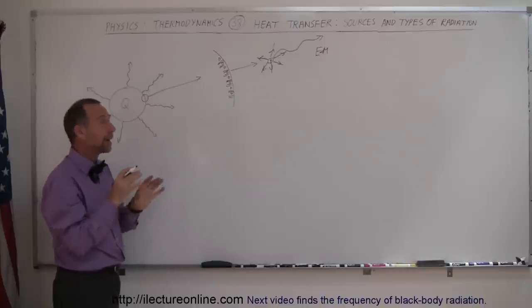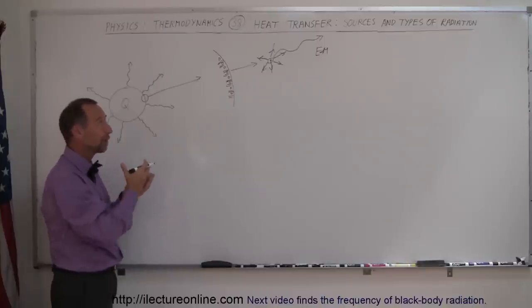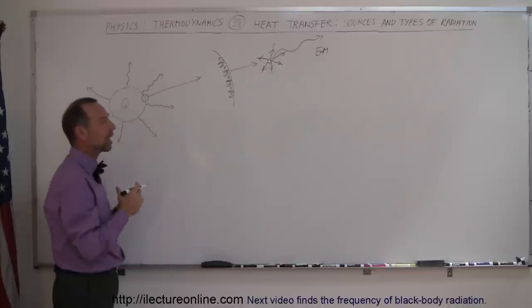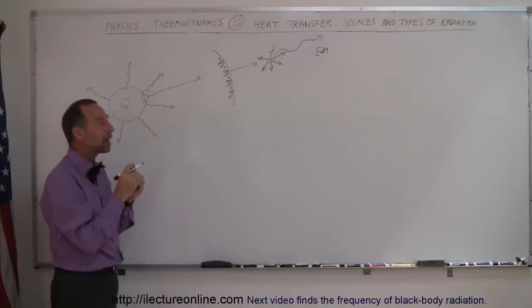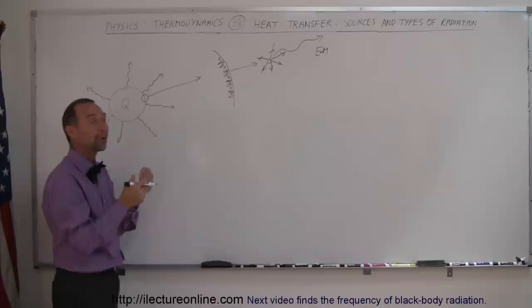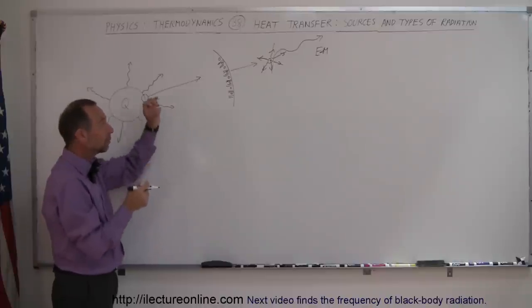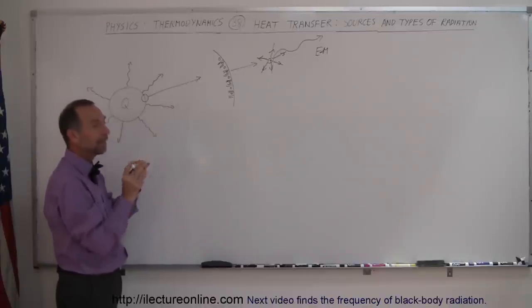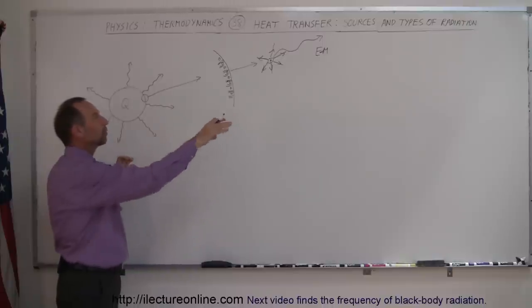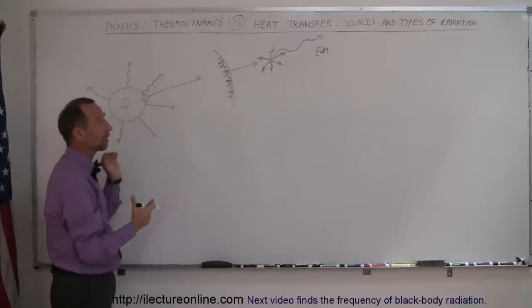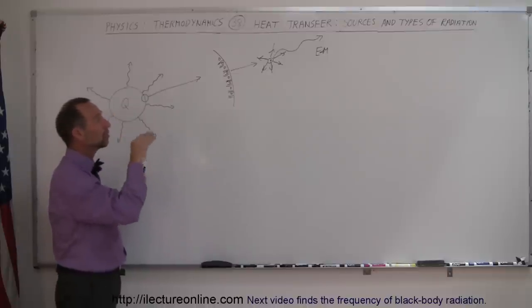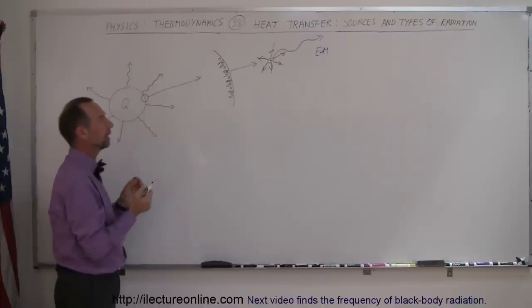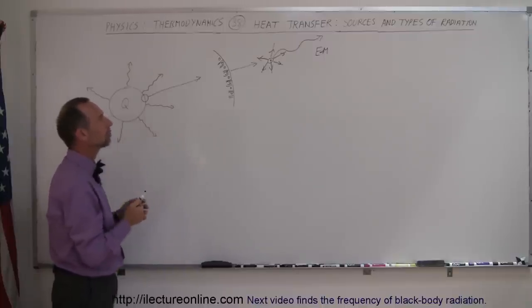The amount of energy radiated depends upon the temperature and the surface area of the object. The type of radiation that emanates depends upon the frequency of the vibration of the object. If the atoms vibrate very slowly, you get very long wavelengths. If the atoms vibrate very quickly, the frequency is correspondingly high and the wavelengths shorten.